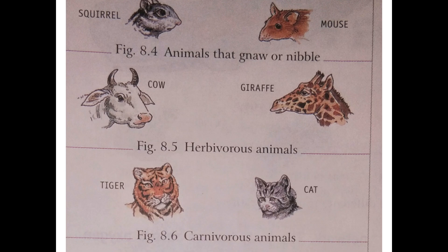Herbivorous animals like cows, giraffes, and goats have sharp front teeth for biting food and broad teeth at the back for chewing, since they eat green plants and plant products only. In the case of carnivorous animals like lions, tigers, and cats, they have sharp pointed curved front teeth to tear flesh, and at the back side they have grinding teeth for chewing flesh and bones.